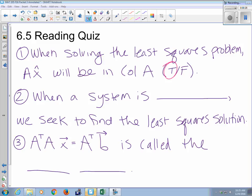When a system is what? That's when we start looking for a least squares solution. Inconsistent, yeah. And A transpose AX equals A transpose B, this is how you find the least squares solution, and what is that thing called? The normal equation, or normal equations.